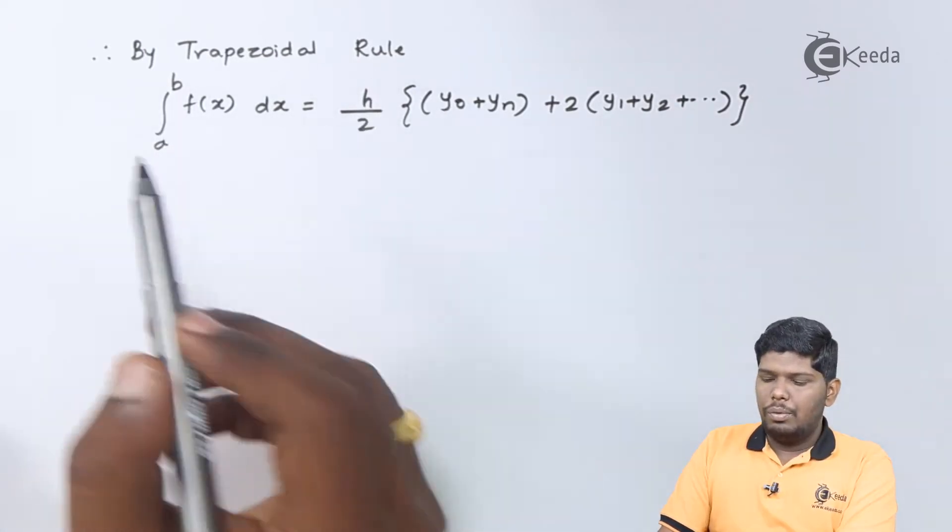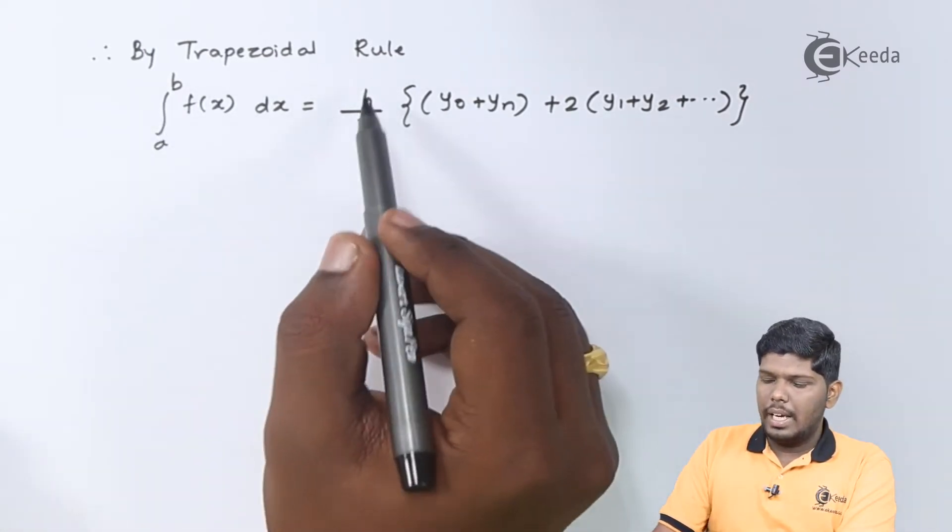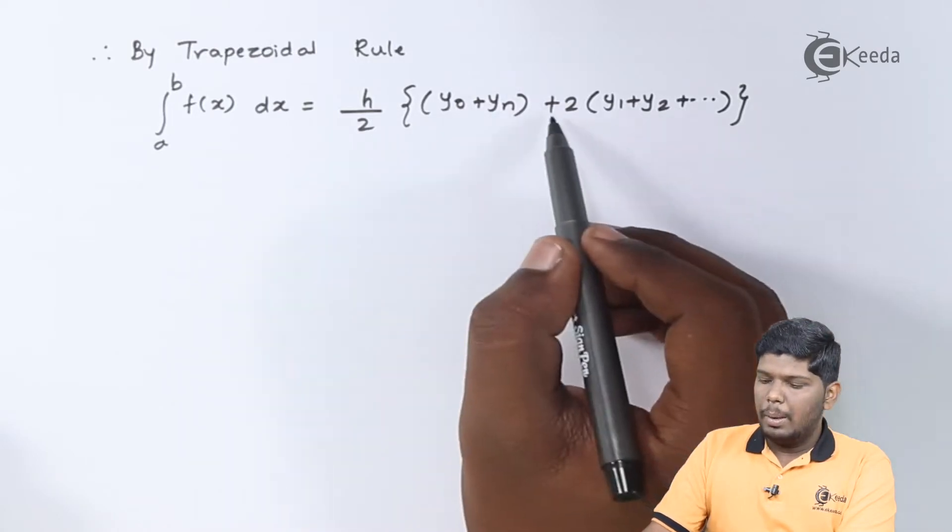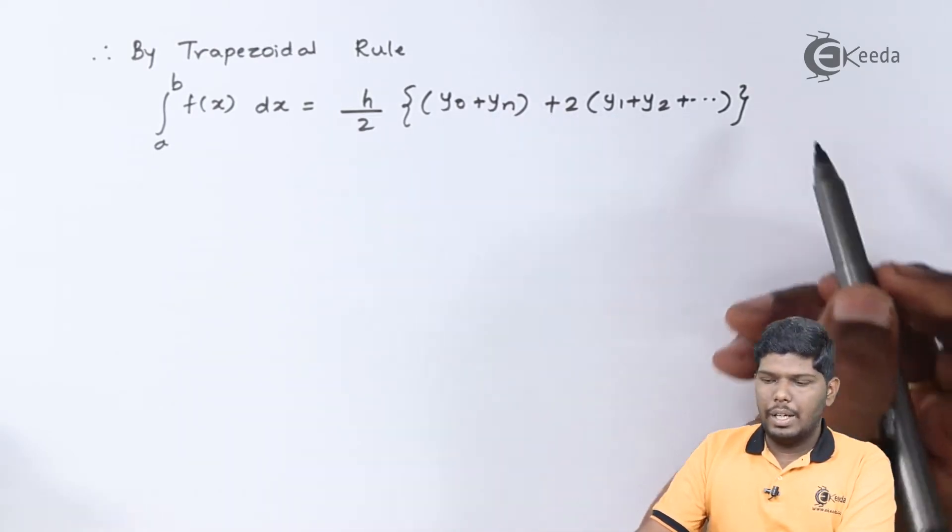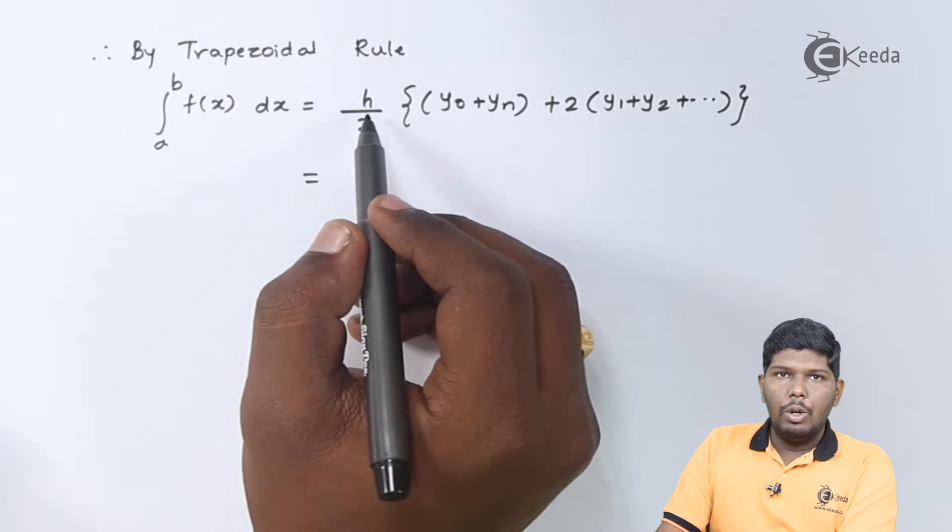Therefore, by trapezoidal rule, we have integral a to b of f of x dx as h by 2 into y0 plus yn plus twice the sum of remaining terms. The value of h is 0.25.